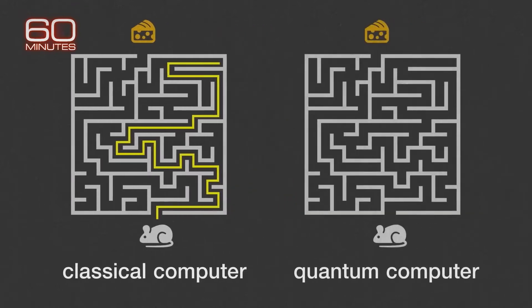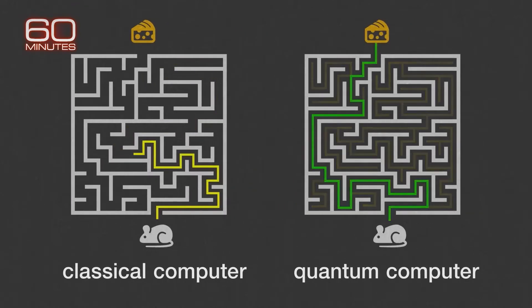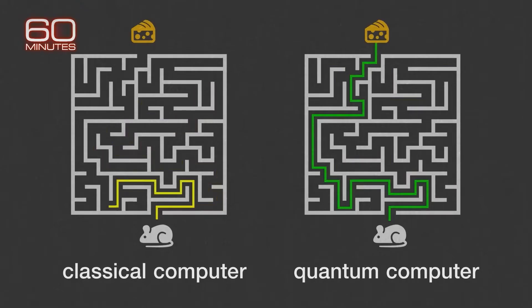Now, a quantum computer scans all possible routes simultaneously. This is amazing. How many turns are there? Hundreds of possible turns — quantum computers do it all at once.